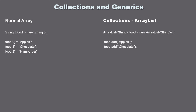You will remember that with a normal array we use these brackets to define the array, we give it a name, and we construct it. The critical piece is that we decide the size of the array right here — in this case three elements. This array is going to hold three different types of food: apples, chocolate, and hamburger.